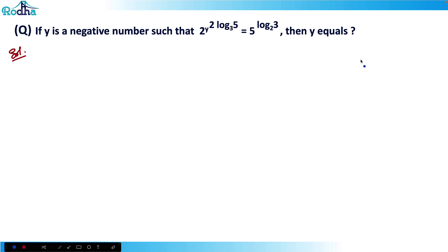So the first property of log we'll be using here is, whenever we have a raised to log c base b, this a and c actually can be interchanged, so we can write here c raised to log a base b. That's the first property you can use here.